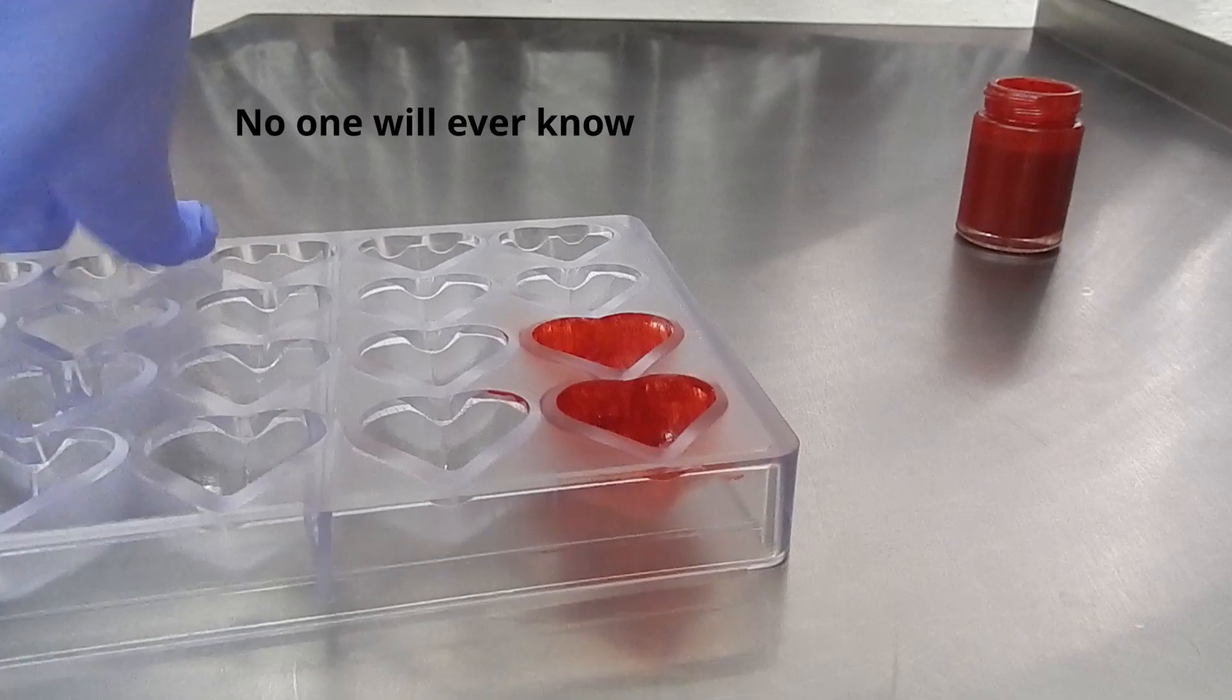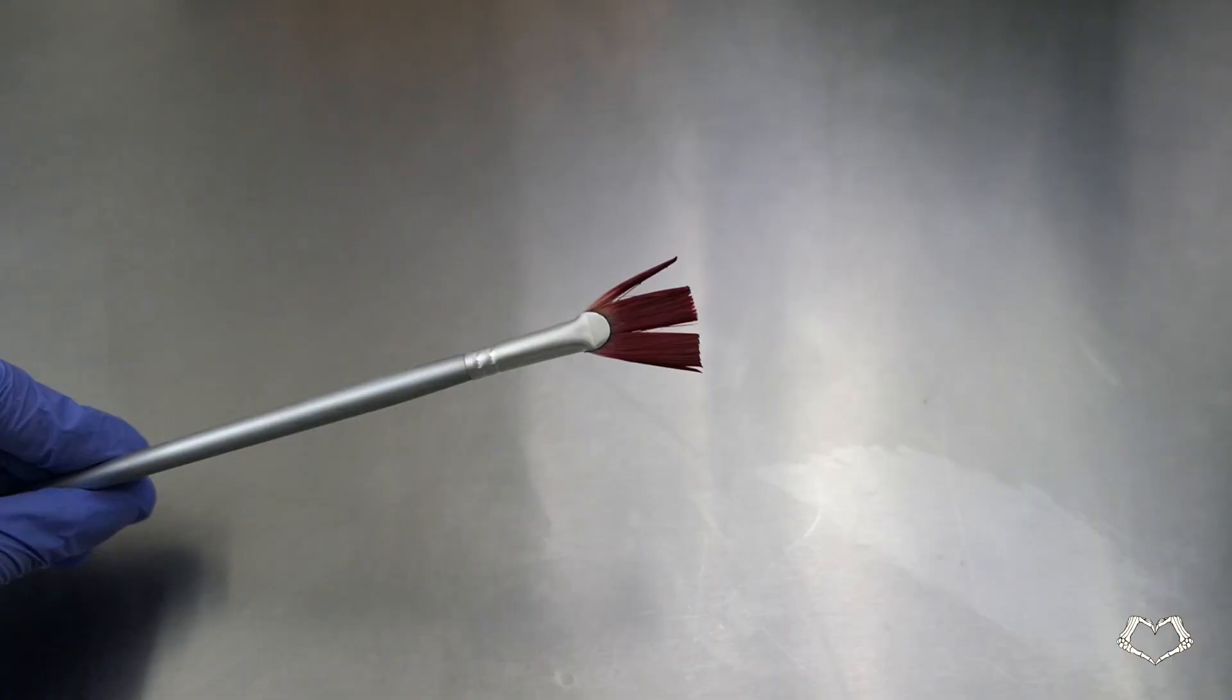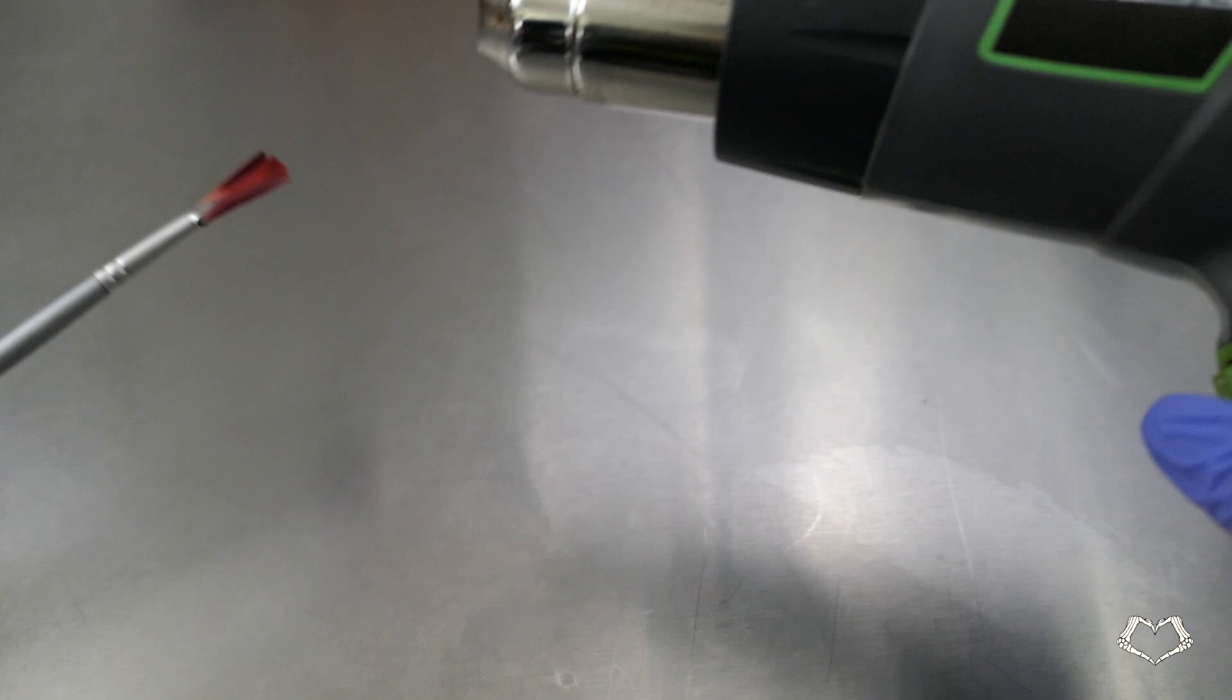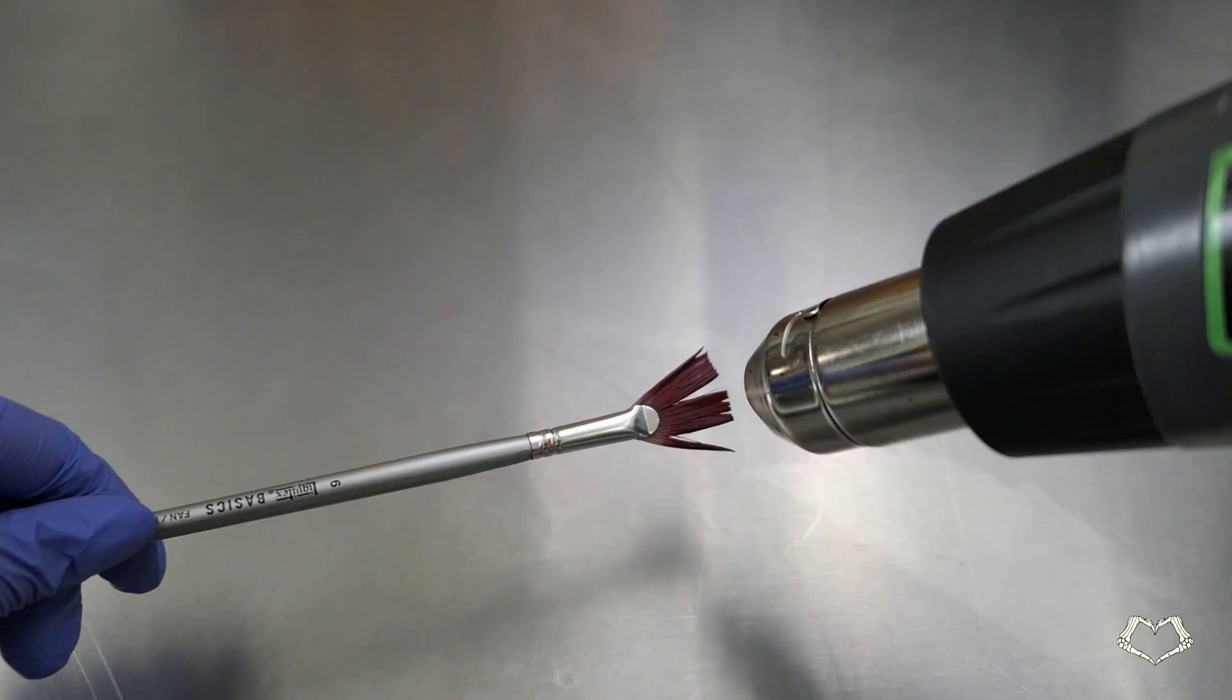If you find while you're painting it in, your brush hardens with the cocoa butter, you can use a heat gun to gently melt the cocoa butter again. Be careful not to melt your brush.